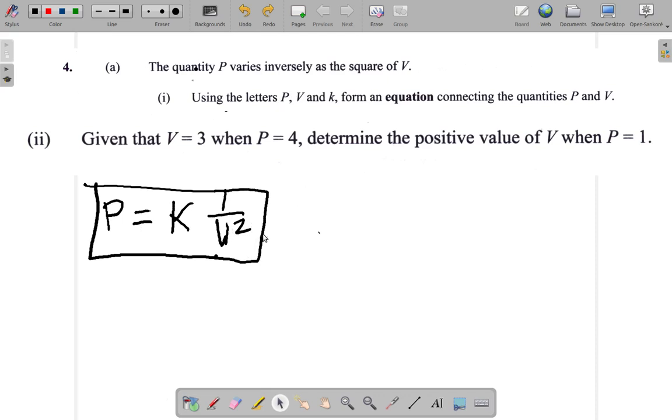Now, part 2 of this question says, given that V is 3 when P is 4, determine the positive value of V when P is 1. Let's see what's happening here.